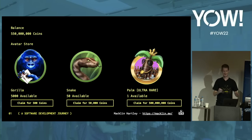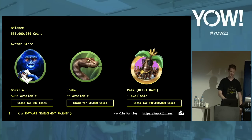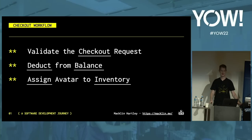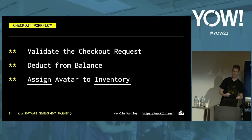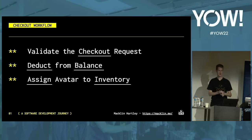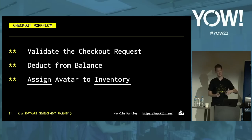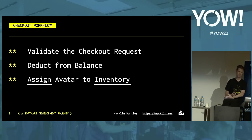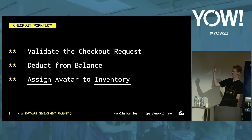Now we just have to decide what the server-side application architecture is going to look like. The server-side engineers get to work and think about all the steps involved in this workflow. First, we have to validate the request — we don't want anyone cheating the system and buying up all the avatars. Then the server will need to deduct the cost from the customer's balance. Once that cost is deducted, the avatar can be assigned to that player. You're going to start noticing some recurring language: checkout, deduct, balance, assign, and inventory.